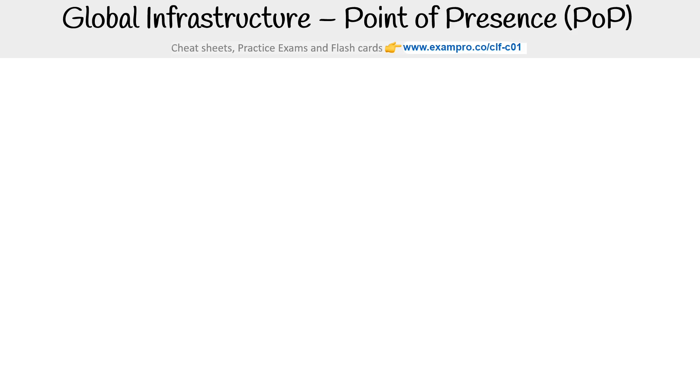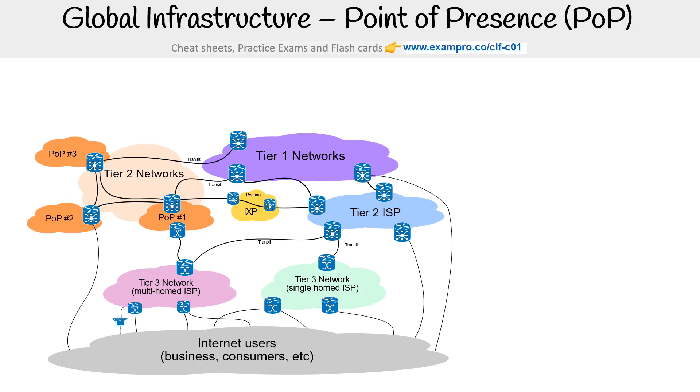So to help put PoPs more in perspective in the general sense, here is a diagram I got from Wikipedia that shows a bunch of different networks. Notice where the PoP is - it's on the edge or the intersection of two networks. So here we have tier three and tier two, and there's this PoP that is in between them.